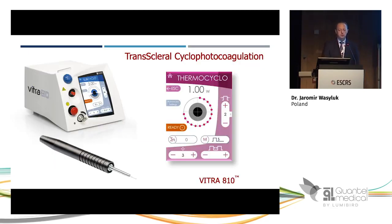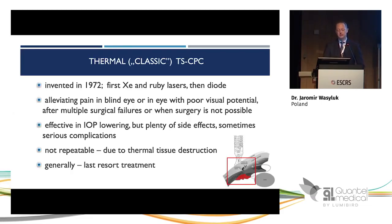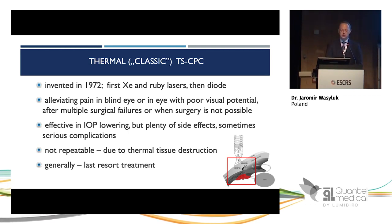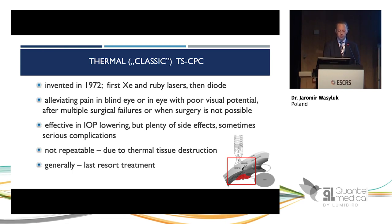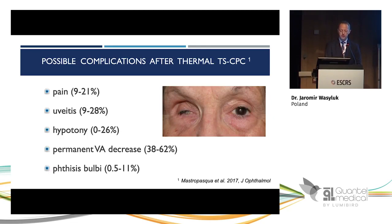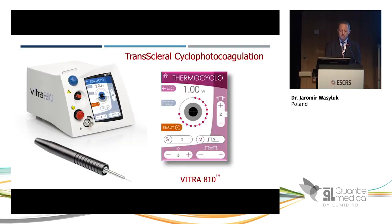The other method is trans-scleral cyclophotocoagulation (TCPC). This is a well-known, older method, invented in 1972 — first performed with xenon and ruby lasers, then diode. It is still widely used for alleviating pain in blind eyes with poor visual potential, after surgical failures, or where surgery cannot be performed. It is very effective in IOP lowering but is burdened by many side effects, sometimes serious complications, and is not repeatable due to thermal destruction of tissue. It is generally a last-resort treatment.